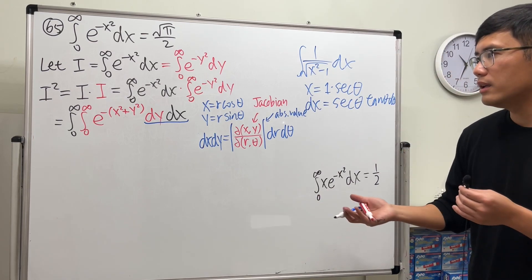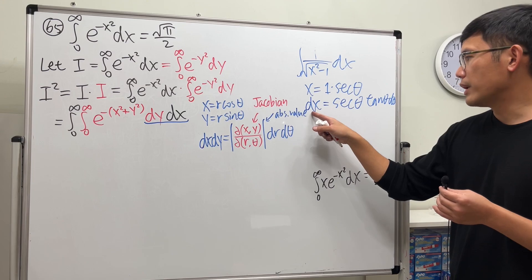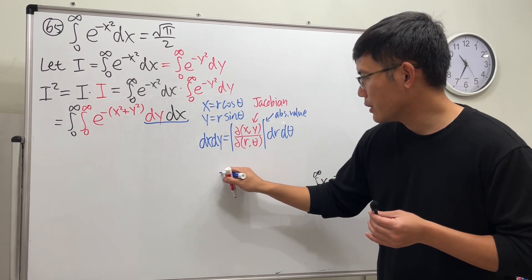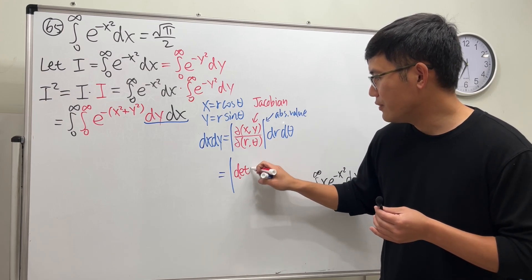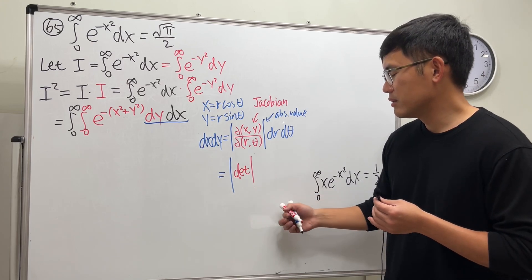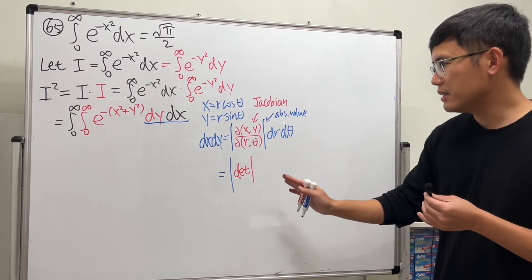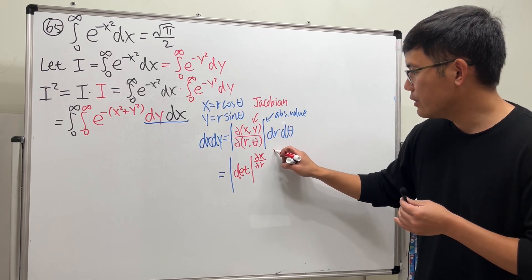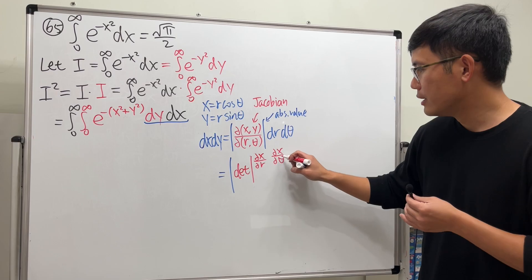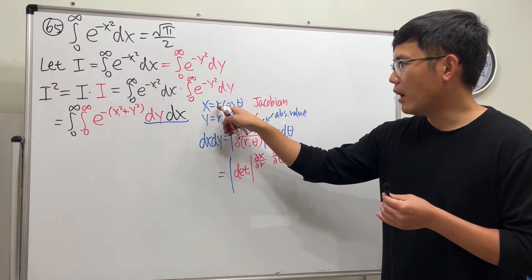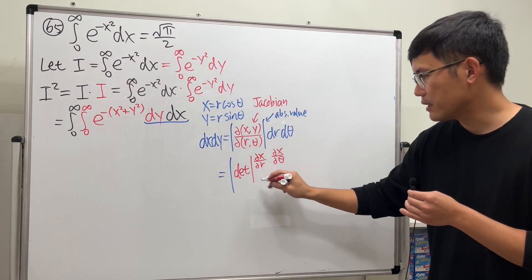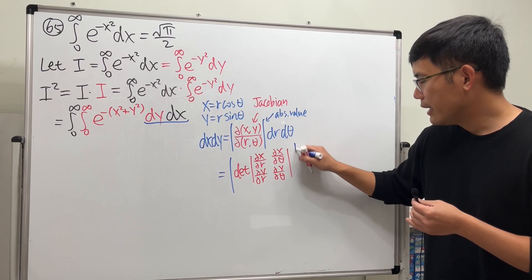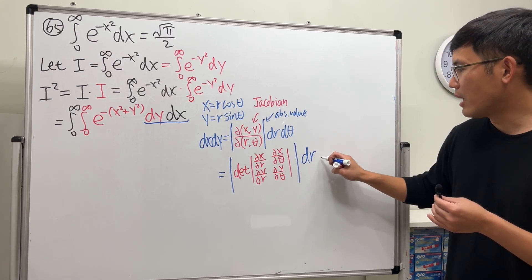The Jacobian is expressed as a determinant — I write 'det' to avoid confusion with absolute value bars. We look at x and take its partial derivative with respect to r, then the partial of x with respect to theta. Then partial of y with respect to r, and partial of y with respect to theta, forming a 2×2 matrix.